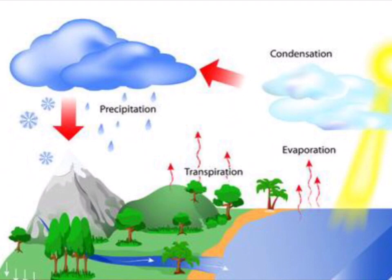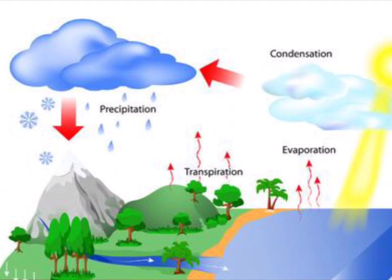This is what really happens in the water cycle. The sun heats the water from oceans, lakes and rivers and water changes into vapour by the process of evaporation. Plants also lose water in the form of water vapour from their leaves into the air by the process of transpiration. The water vapour rises into the air, it starts cooling down and forms water droplets. These water droplets come together to form clouds. This process is called condensation.